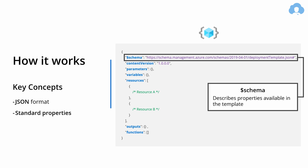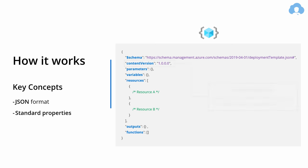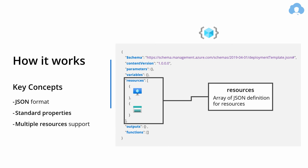The schema has a date in it indicating the current version you're working in. The next field is content version, which allows you to version your templates. If you're using tools like Git, it's not that important to keep this field up to date. Next, you have the most important section: the resources section. It's an array of JSON objects where each object describes the service that's going to be deployed, and you can have multiple resources deployed using a single template.